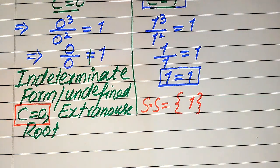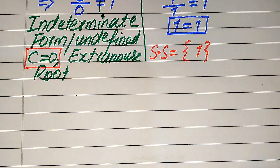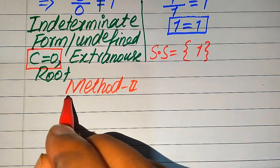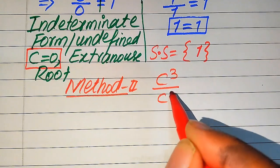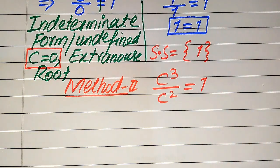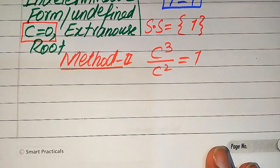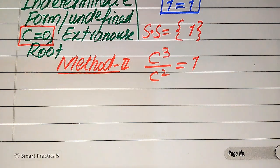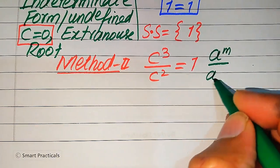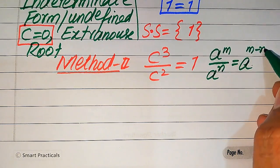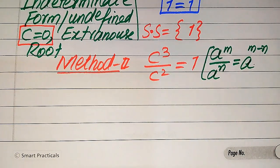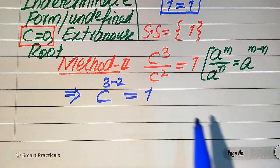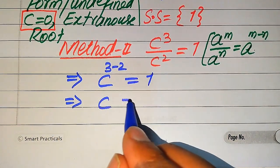In the second method, we copy down the given equation: C cubed divided by C squared equals 1. We use the exponential law: a to the power m divided by a to the power n equals a to the power (m minus n). Applying this law, C cubed divided by C squared becomes C to the power of (3 minus 2), which equals C to the power 1, equals 1. So we easily get C equals 1.